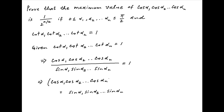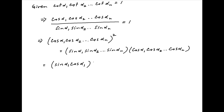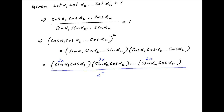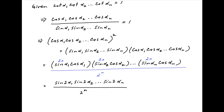Now multiply both sides with cos(α₁) · cos(α₂) · ... · cos(αₙ). The right hand side can be rearranged as sin(α₁)cos(α₁) · sin(α₂)cos(α₂) · ... · sin(αₙ)cos(αₙ). Multiplying each term by 2, there are n such terms, so dividing by 2^n we get sin(2α₁) · sin(2α₂) · ... · sin(2αₙ) divided by 2^n.